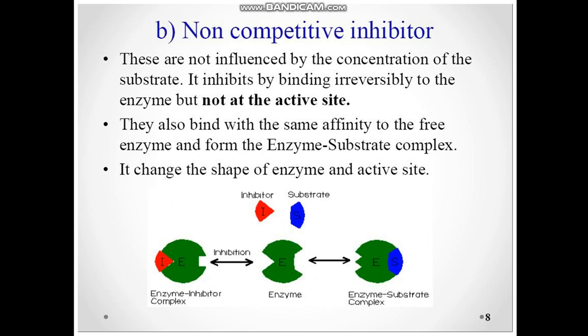Non-competitive inhibitors are not influenced by the concentration of the substrate. They inhibit by binding to the enzyme but not at the active site — they bind at an allosteric site. They bind with the same affinity to the free enzyme and to the enzyme-substrate complex. This changes the shape of the enzyme and active site, ultimately blocking the substrate-enzyme complex.